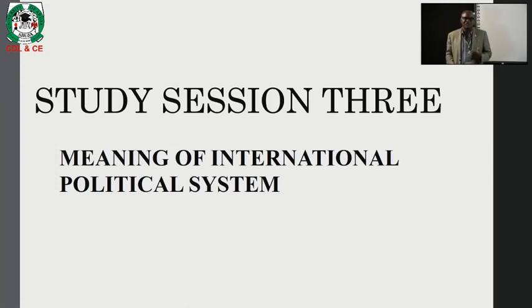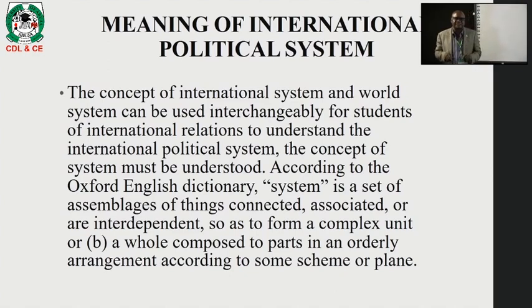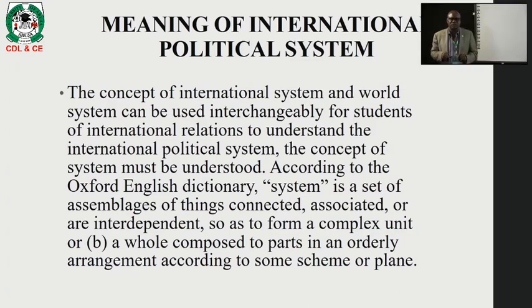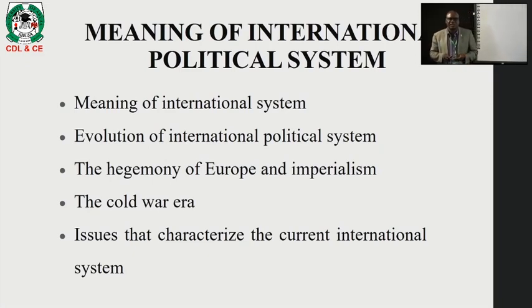Meaning of the international political system. The concept of international system and world system can be used interchangeably for students of international relations. The concept of system must be understood. According to the Oxford English Dictionary, a system is a set or assemblage of things connected, associated, and interdependent so as to form a complex unit or unit arrangement according to some scheme or plan. The international system is a conglomeration of states coming together to form that structure.